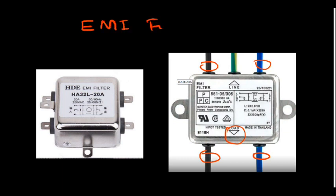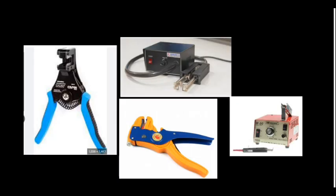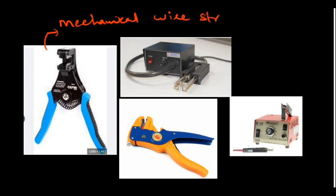So you should be able to identify an EMI filter. And these are some wire strippers. A normal wire stripper you might have seen, but this one is called the mechanical wire stripper. And these two are the thermal wire strippers.